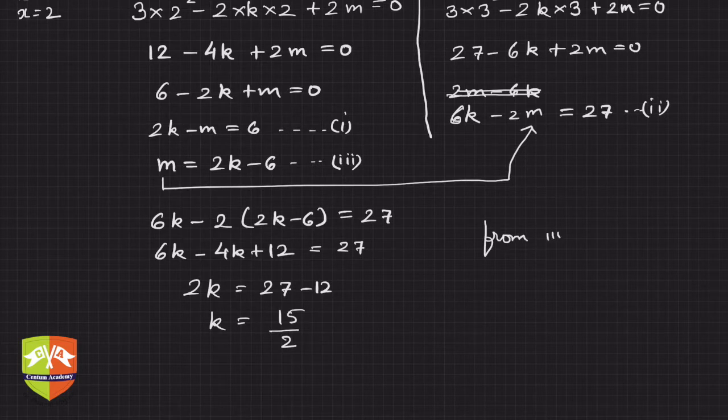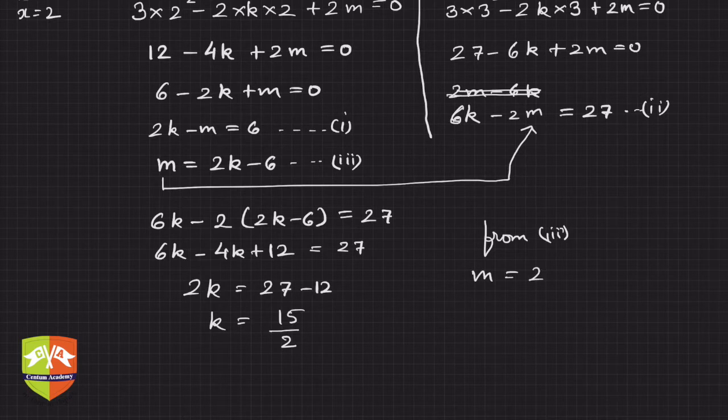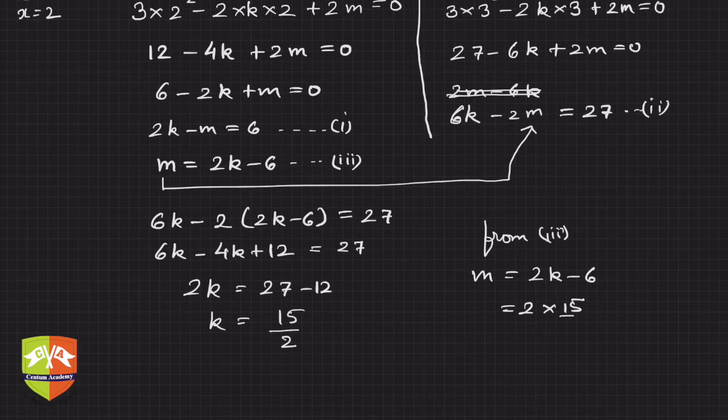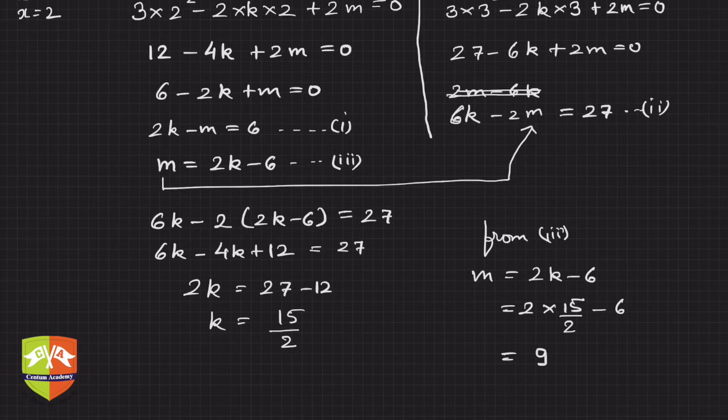This is the value of k. From equation 3, m is equal to 2k minus 6, so hence it is 2 times k, where k is 15 upon 2, minus 6. So hence 15 minus 6 which is 9. This 2 and this 2 goes, 15 minus 6 is 9.